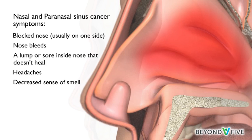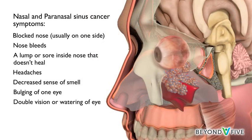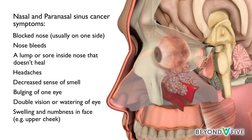If the cancer involves tissue near the eye, it can cause symptoms such as bulging of one eye, double vision, or watering of the eye. Swelling and numbness can also develop in parts of the face, especially in the upper cheek, where the maxillary sinus is located.